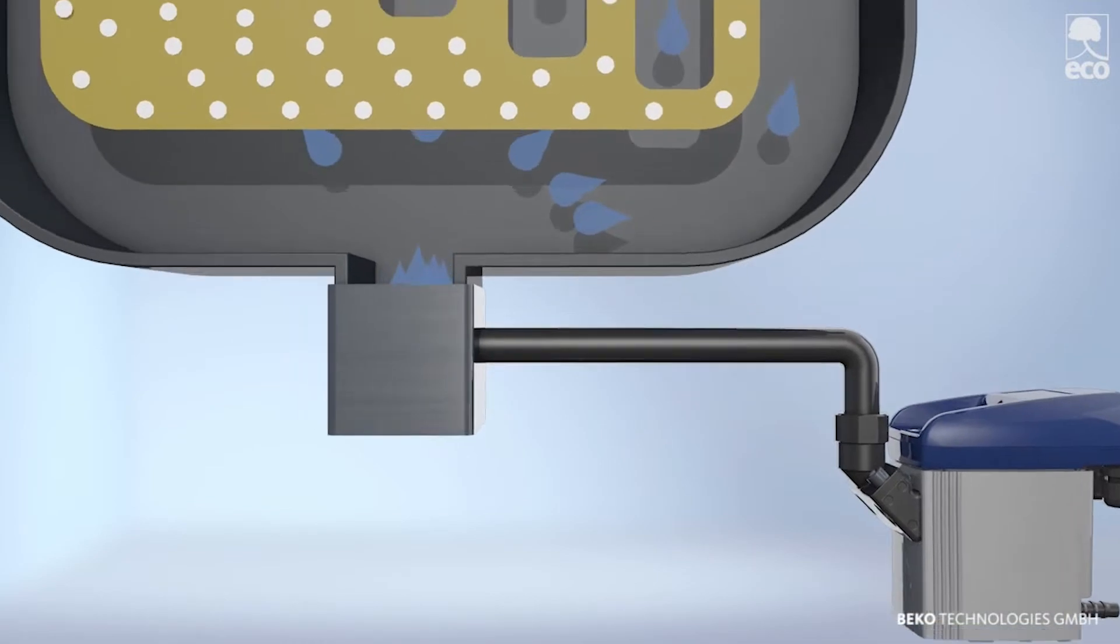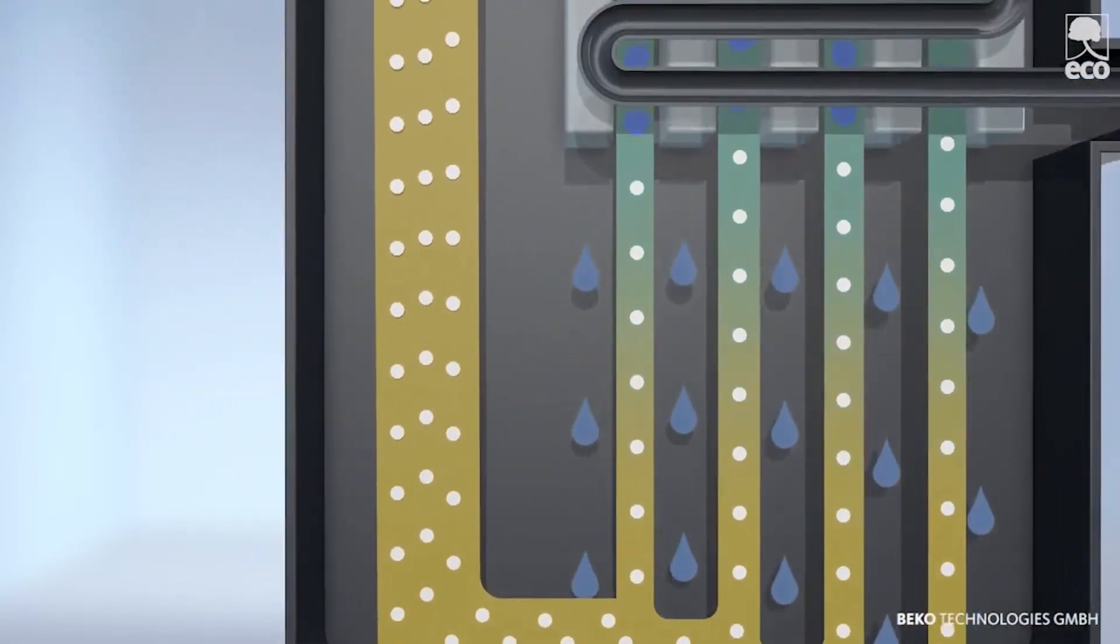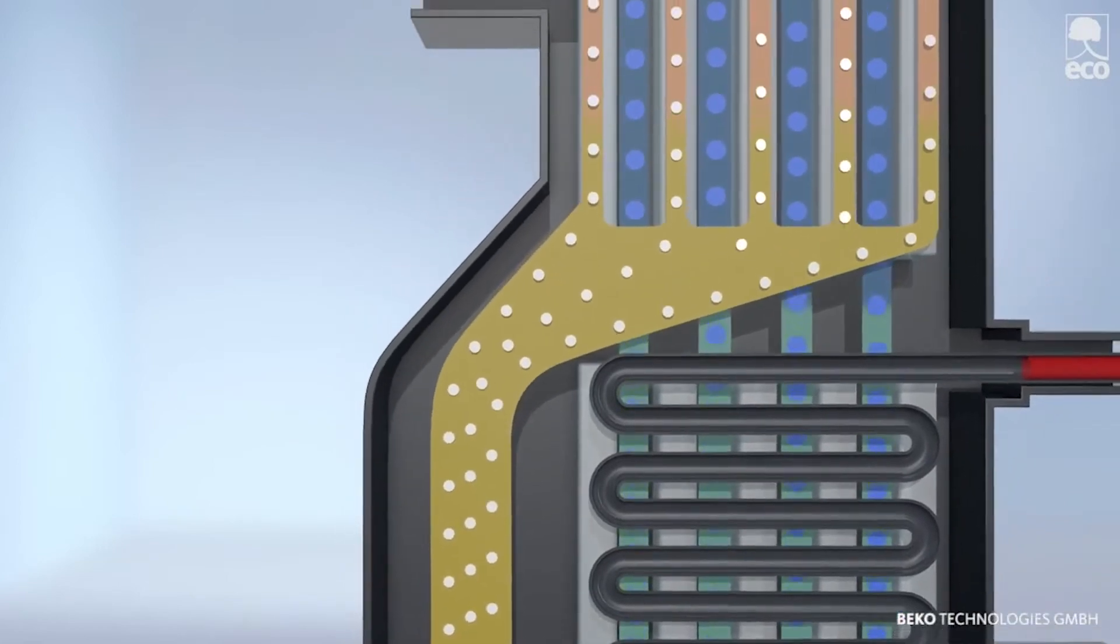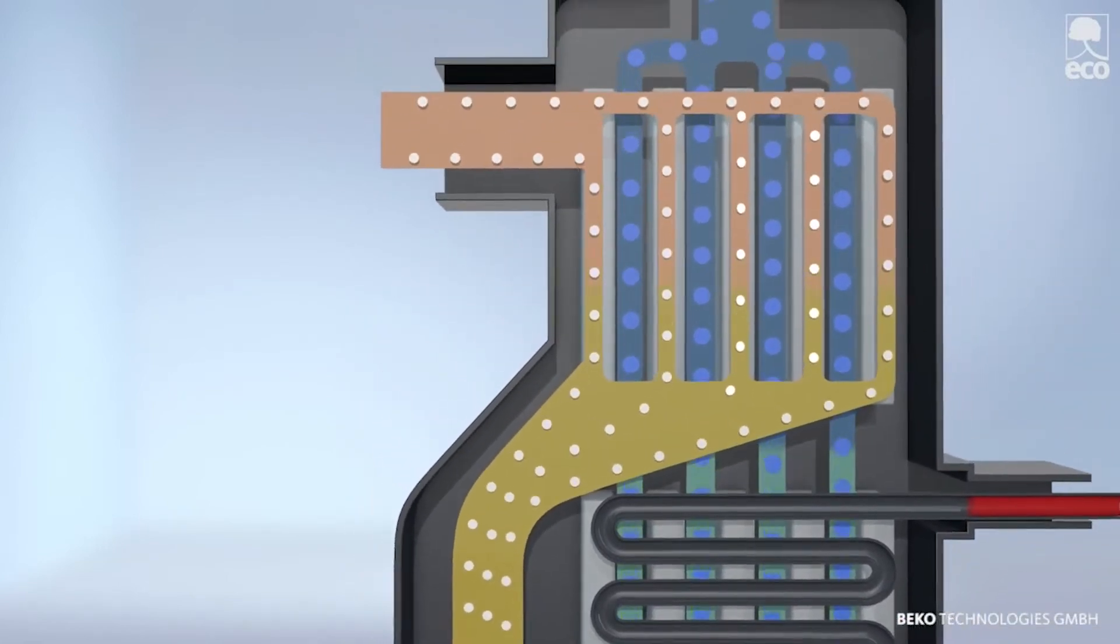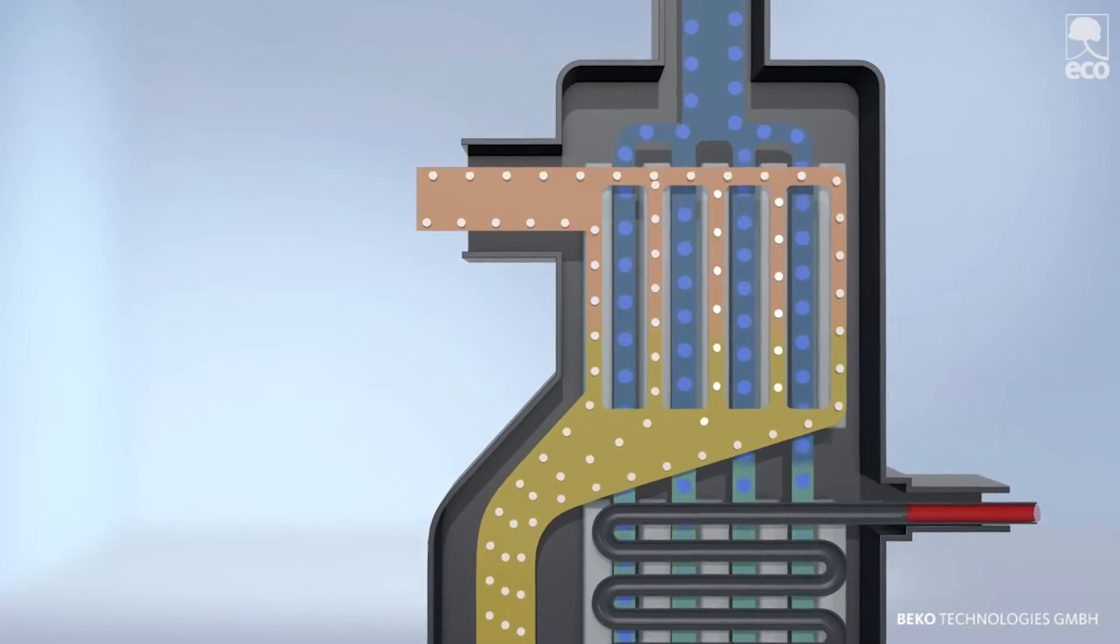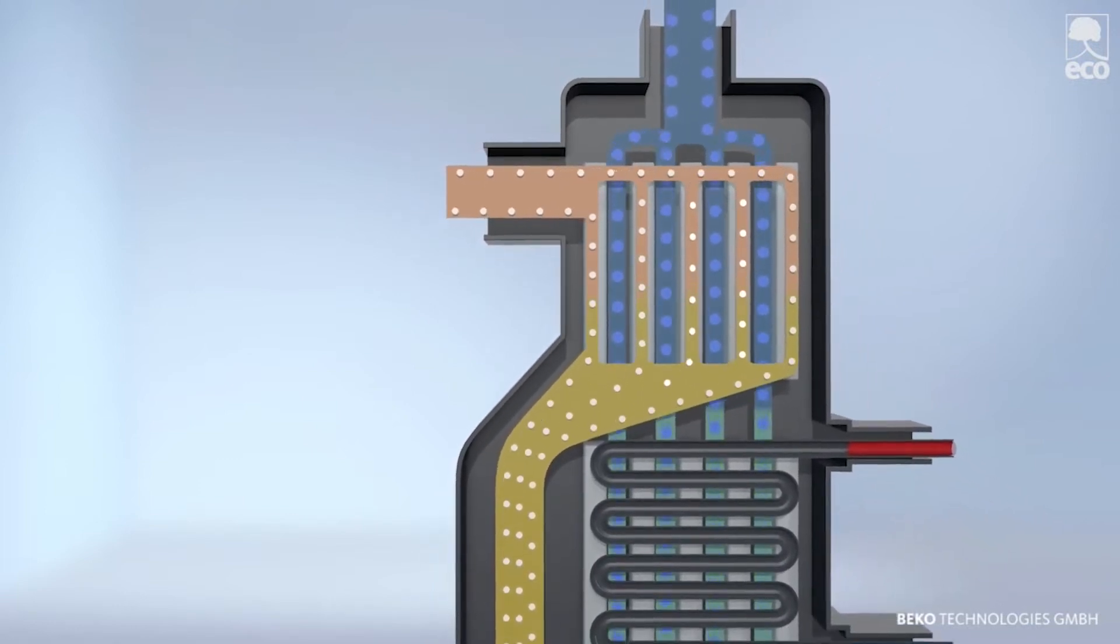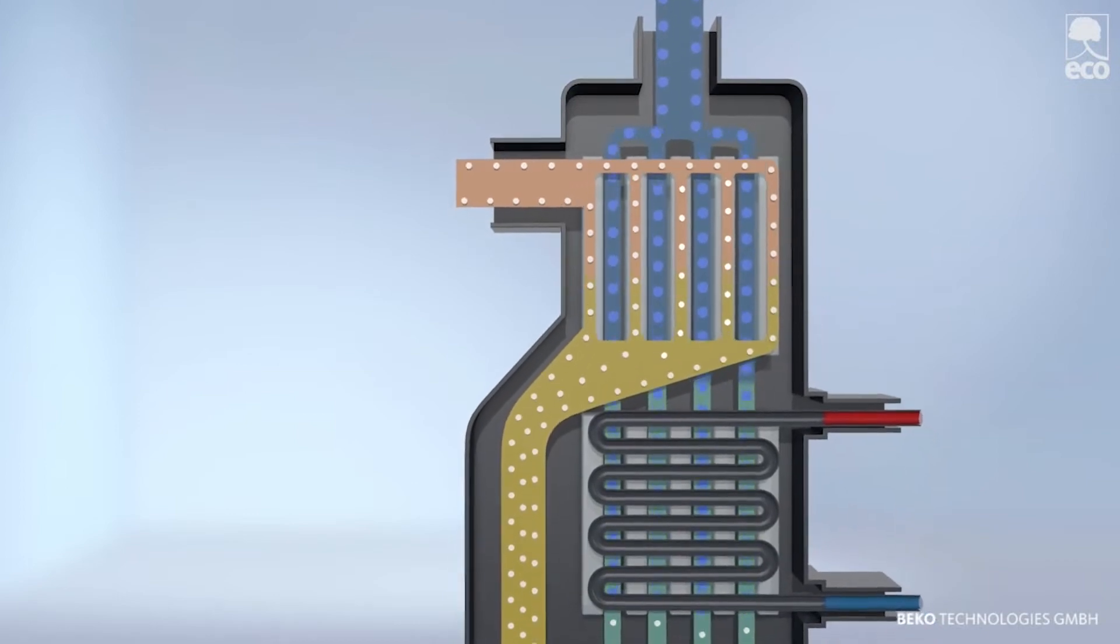The cool, dry compressed air next flows through the upper section, again past the entering air, cooling it as before in a counter-current process and is thereby reheated. This further reduces the relative humidity, making the air even drier.